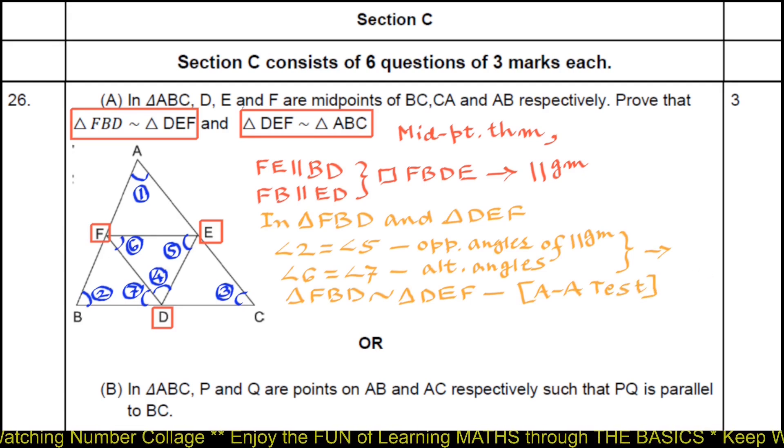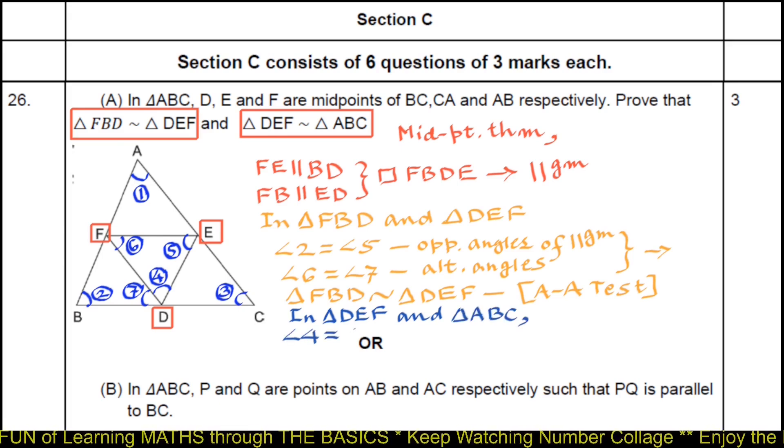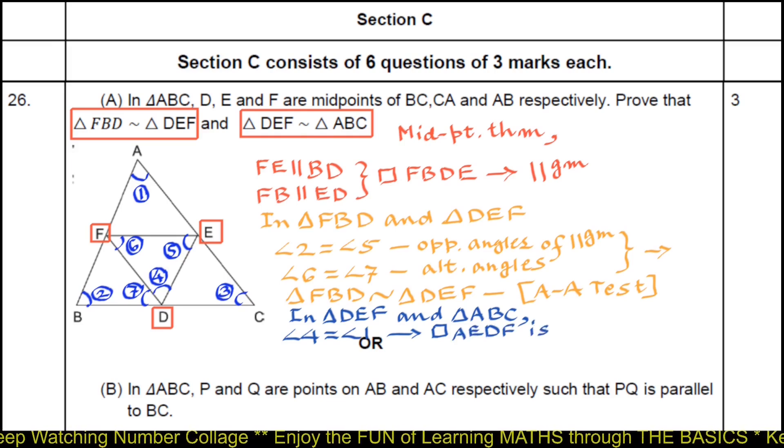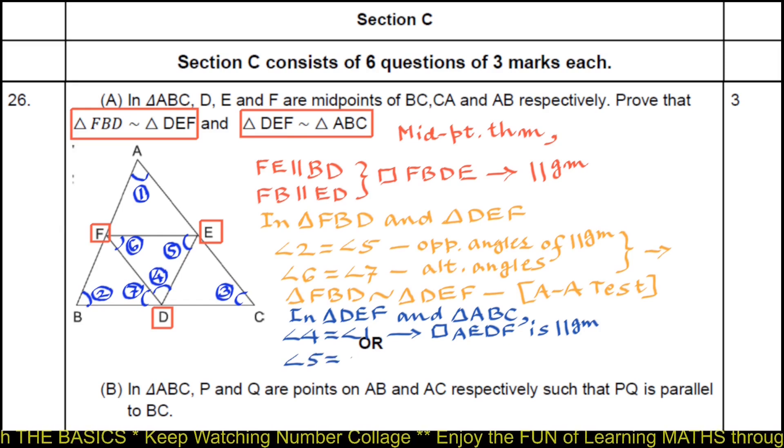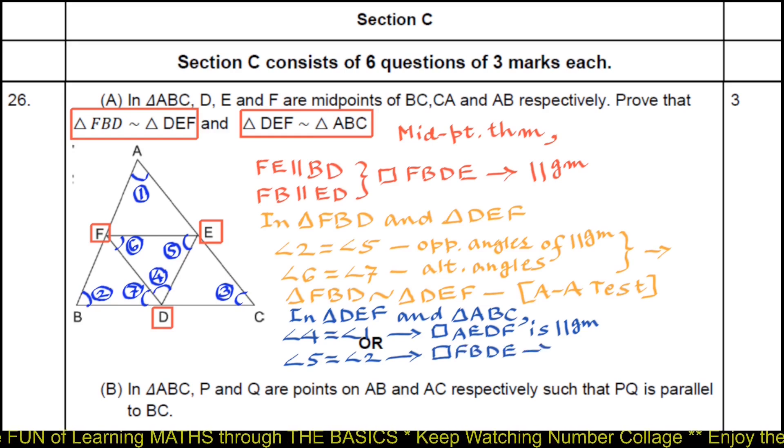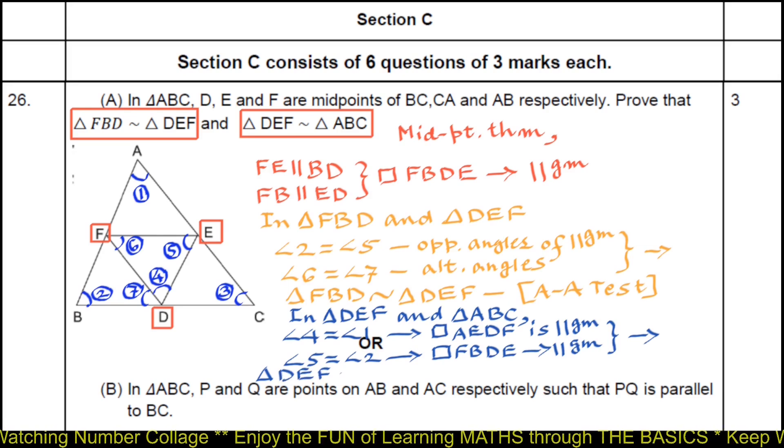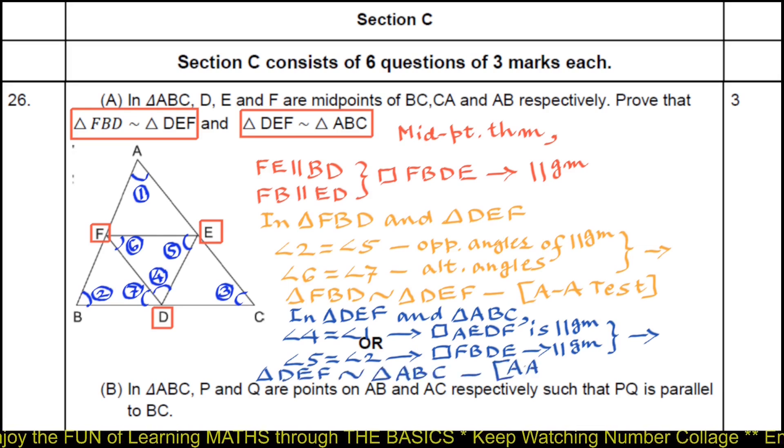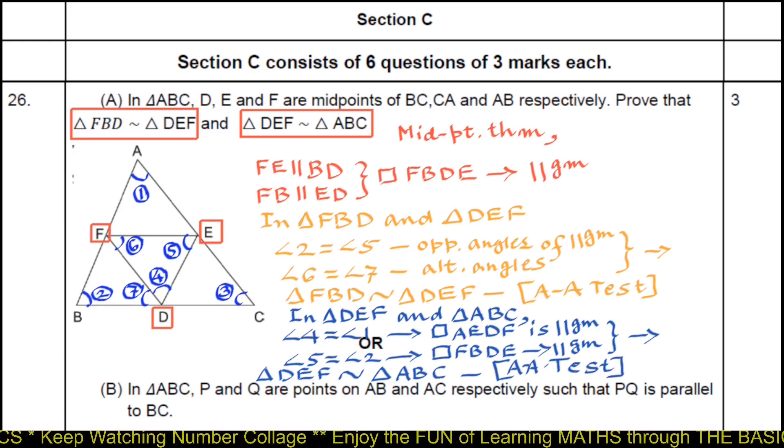In triangle DEF and triangle ABC, angle 4 equals angle 1, quadrilateral AEDF is parallelogram and opposite angles of a parallelogram are equal. Angle 5 equals angle 2 because quadrilateral FBDE is also a parallelogram. So this proves triangle DEF is similar triangle ABC, again by AA similarity criteria or AA test. So second part is also proved.